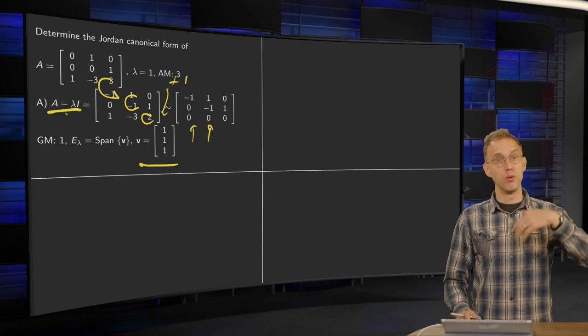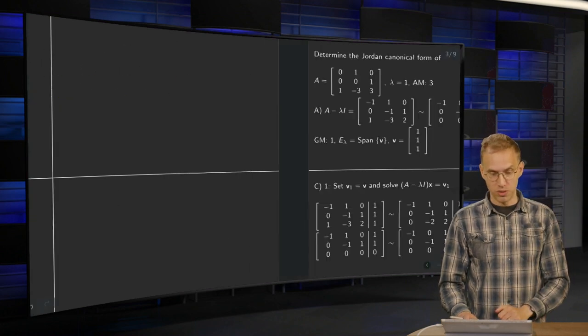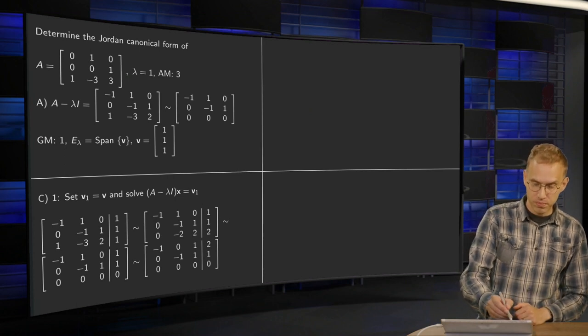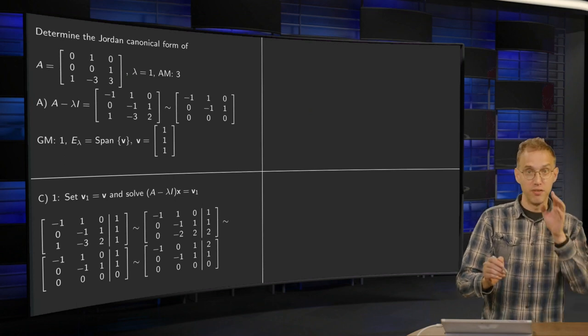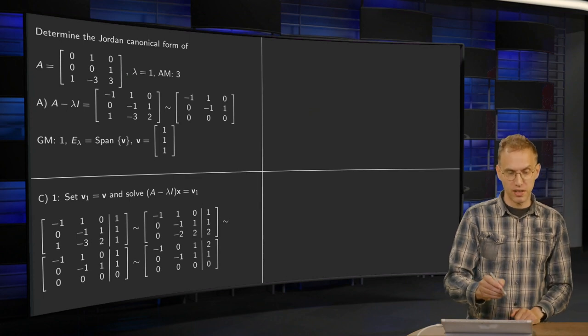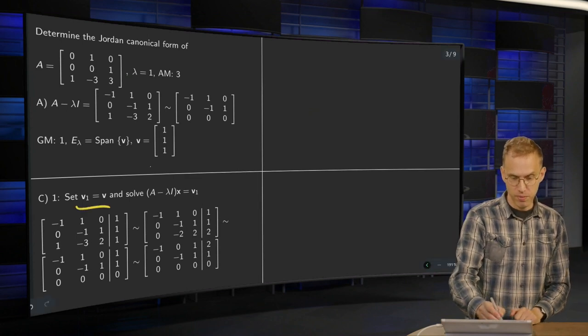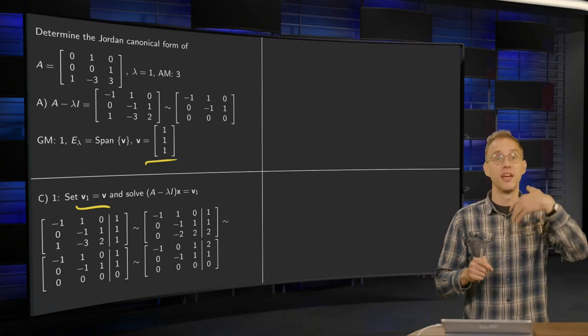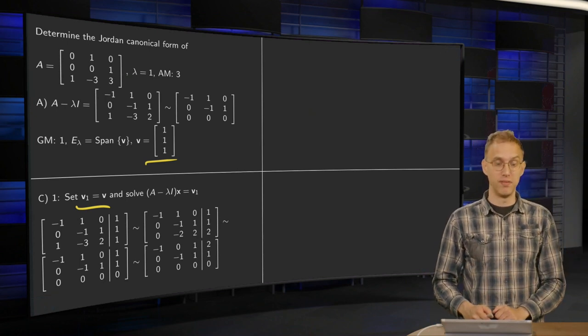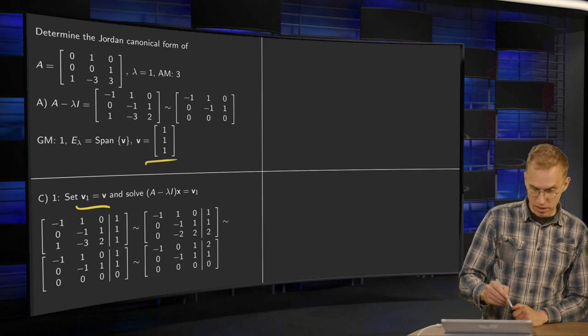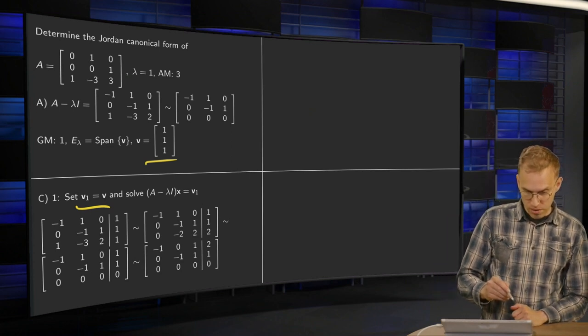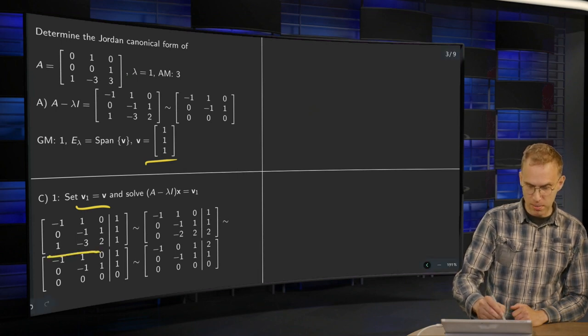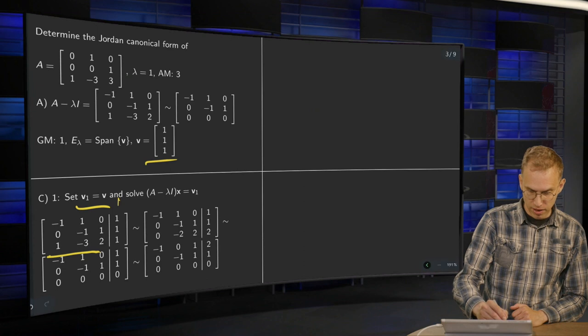What we have to do is to compute the other two generalized eigenvectors. So first we set V1 equals to V, (1, 1, 1). And then we solve A minus lambda I times X equals V1 in order to find V2. So we form our augmented matrix. Here we have our A minus lambda I, and here we have our V.